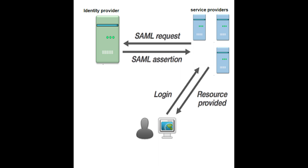Each user authenticates once to an identity provider and can then seamlessly extend their authentication session to potentially numerous applications. The identity provider passes what's known as a SAML assertion to the service provider when the user attempts to access those services. The service provider requests the authorization and authentication from the identity provider.